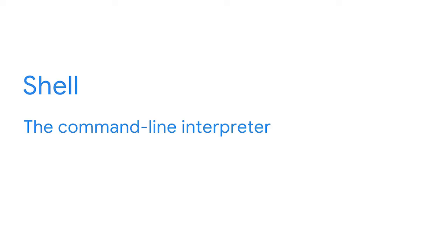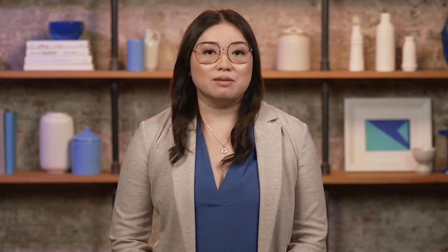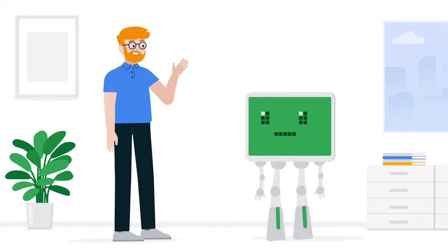Welcome back. In this video, we're going to discuss the Linux shell — the part of the Linux architecture where the action will happen for you as a security analyst. The shell is the command line interpreter, meaning it helps you communicate with the operating system through the command line. The shell provides the command line interface for you to interact with the OS. To tell the OS what to do, you enter commands into this interface. A command is an instruction telling the computer to do something. The shell communicates with the kernel to execute these commands.